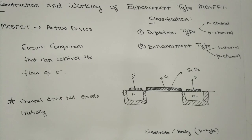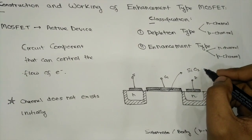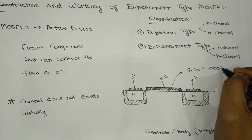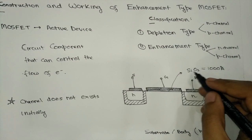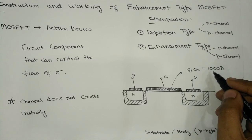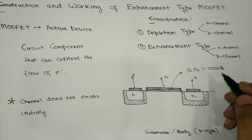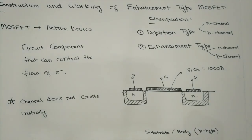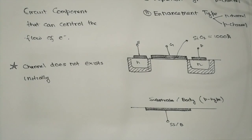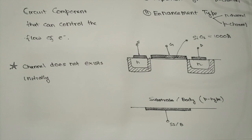There is a thin layer of SiO₂ between the gate terminal and the substrate or body. This SiO₂ layer is very thin, around 10,000 Angstroms in width. SiO₂ is used to control the surface or the substrate using the gate electrode. This is the construction of enhancement type MOSFET, and as we have seen, the channel does not exist initially.